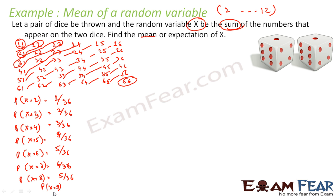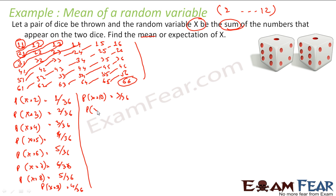Probability of x=9: there are 4 combinations, so 4/36. Probability of x=10: there are 3 combinations, so 3/36. For sum=11, there are 2 numbers (5,6 and 6,5), so 2/36. For sum=12, there is 1 combination (6,6), so 1/36. This completes the probability distribution.